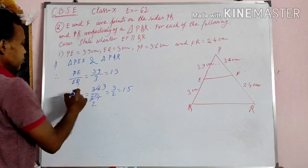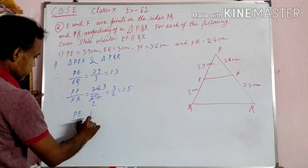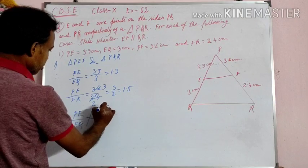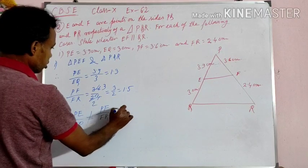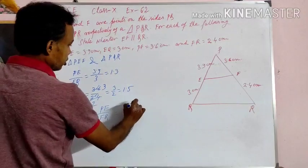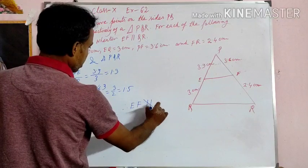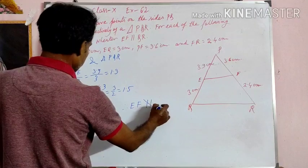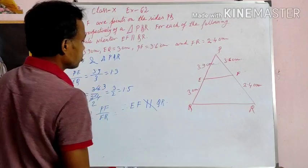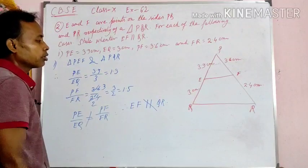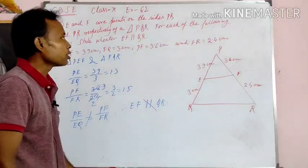So PE by EQ is not equal to PF by FR. Therefore, if PE by EQ is not equal to PF by FR, then according to the Converse Proportionality Theorem, EF would be parallel to QR only if the ratios are equal. But here, PE by EQ is not equal to PF by FR. So EF is not parallel to QR. This is the first part of the question.